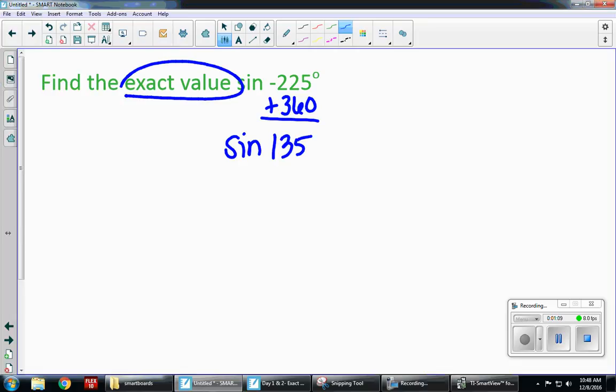I see the phrase exact value, so I'm thinking two things. No decimals, and use my chart. The chart has three angle values, 30 degrees, 45 degrees, and 60 degrees. So I need to work with 135 in order to use one of those three that I already know.